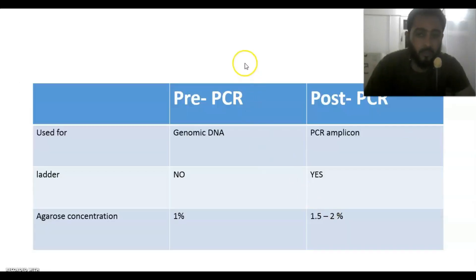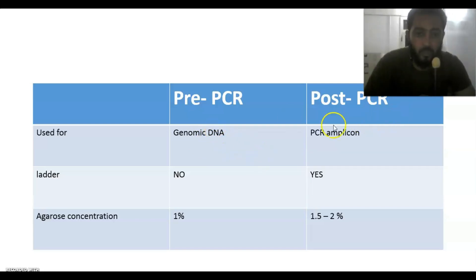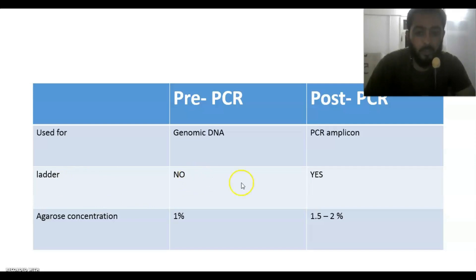There are some differences between pre and post PCR in their uses. We use pre-PCR electrophoresis to assess the quality and quantity of genomic DNA, in cases where there is no nanodrop device in your lab. In post-PCR, we use it for PCR amplicons. In cases of using the ladder, there is no need to use a molecular size ladder in pre-PCR, but the ladder plays an important role in post-PCR.